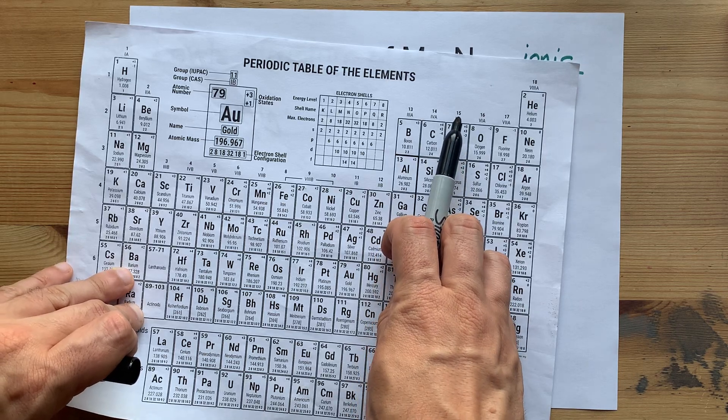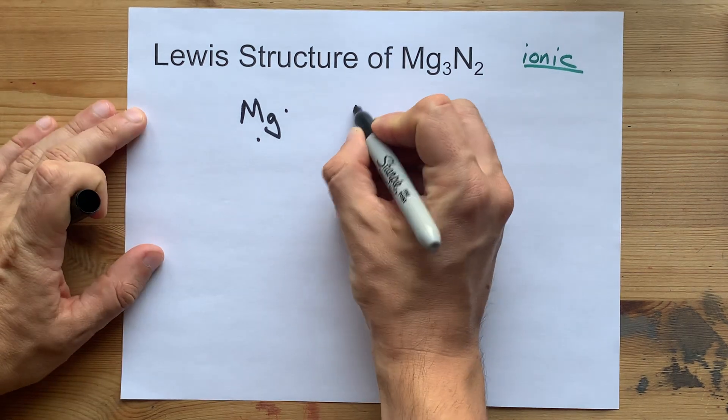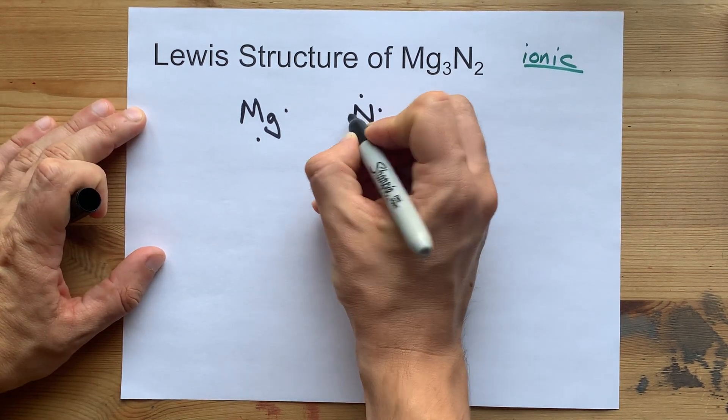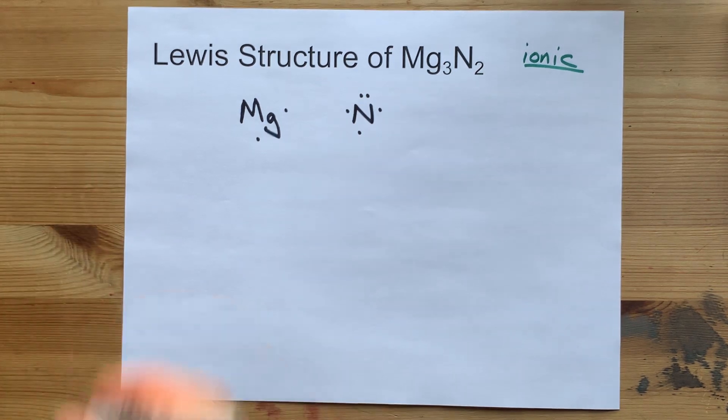Nitrogen in group 15 brings 5 valence electrons: 1, 2, 3, 4, 5. I'm just spreading them out before I double them up. It's good form.